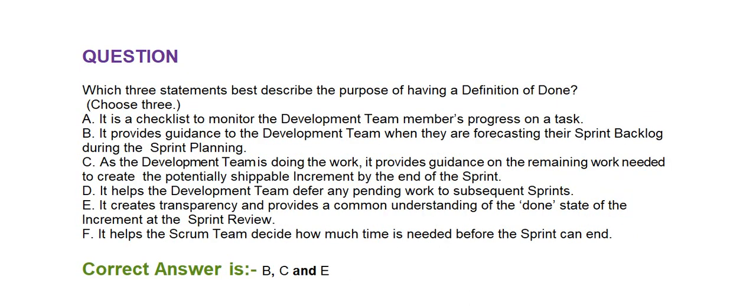Next question: Which three statements best describe the purpose of having a definition of done? Choose three. Option A: it is a checklist to monitor the development team members' progress on a task. Option B: it provides guidance to the development team when they are forecasting their sprint backlog during sprint planning. Option C: as the development team is doing the work, it provides guidance on the remaining work needed to create the potentially shippable increment by the end of the sprint. Option D: it helps the development team defer any pending work to subsequent sprints. Option E: it creates transparency and provides a common understanding of the done state of the increment at the sprint review. Option F: it helps the Scrum team decide how much time is needed before the sprint can end. Correct answer is Option B, C, and E.